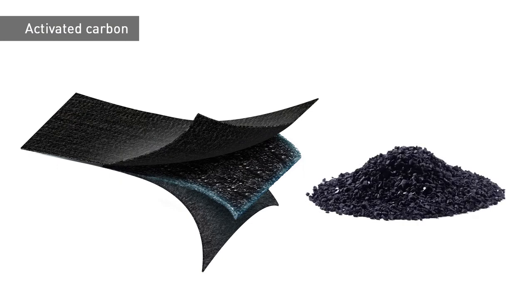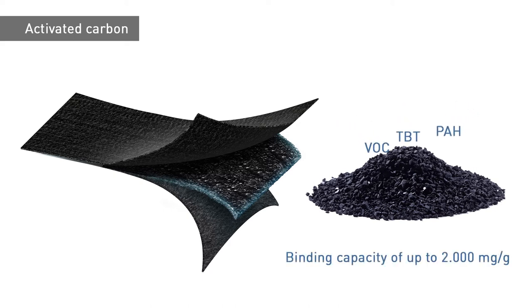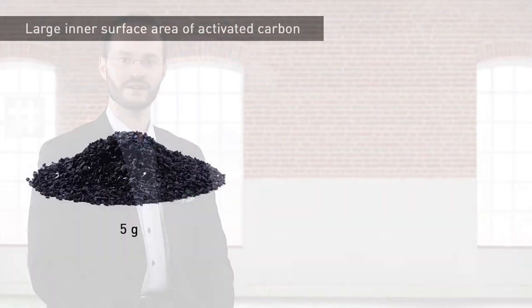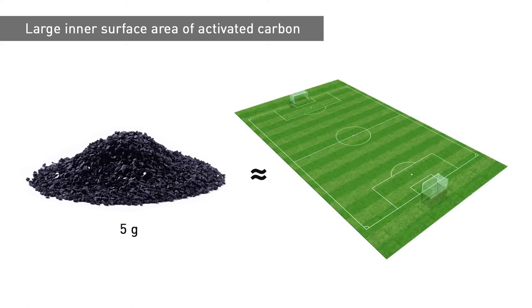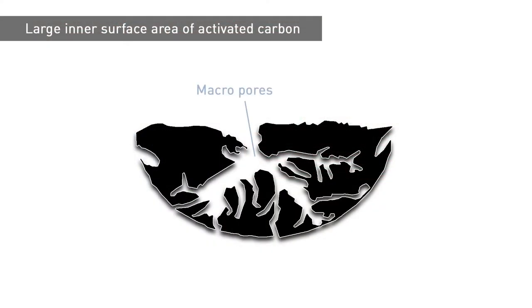Activated carbon, as a further active substance, is used as an adsorption agent in a wide range of contemporary applications. These range from drinking and wastewater treatment to the chemical industry. Activated carbon is able to bind a wide variety of contaminants and has a capacity of up to 2,000 milligrams per gram. The material's binding properties result from its extremely large inner surface area. The surface area offered by 5 grams of activated carbon can sometimes equal that of a football pitch.